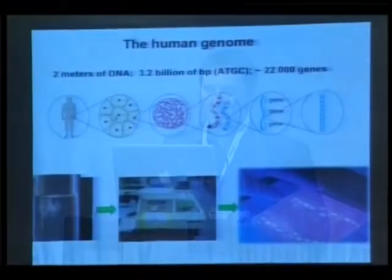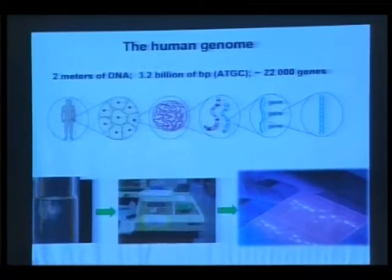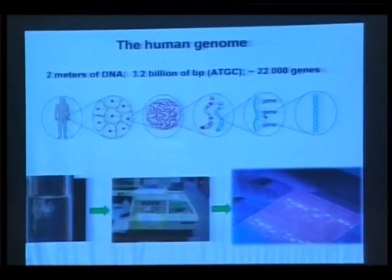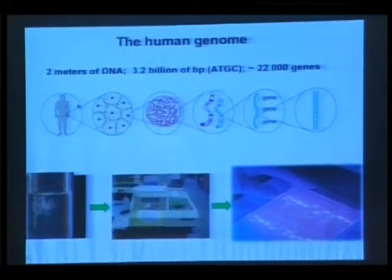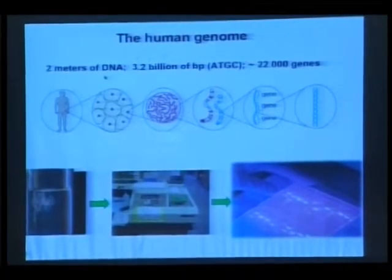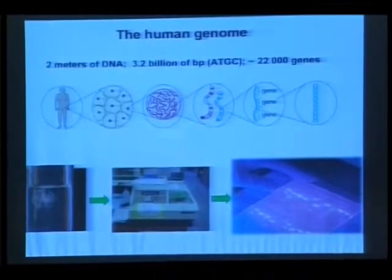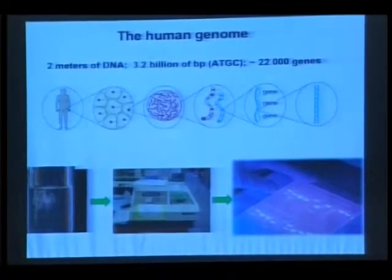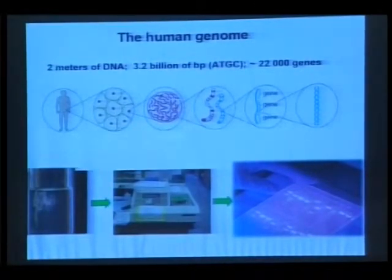Just to briefly give you some update on the genome: in each of your cells you have a nucleus, in each nucleus you have DNA organized into chromosomes, and on chromosomes you have genes. It's very compact because you have about two meters of DNA in each cell, with 3.2 billion base pairs. It's very simple - it's just ATGC, only four letters.